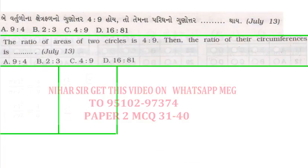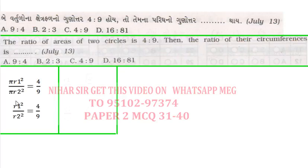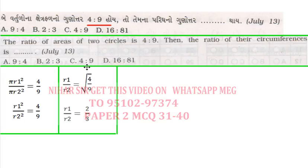Next: for the ratio of areas of two circles, pi cancels out and I need the ratio of r1² to r2². To find the ratio of radii, I take the square root of the area ratio. The answer is 2:3.